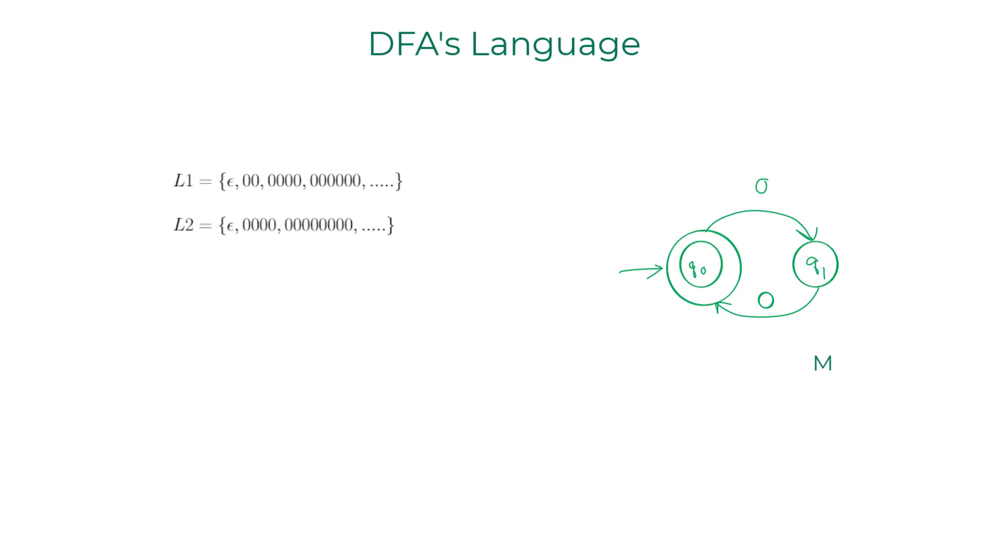But if I ask you, what is this machine's language, which one would you pick? I'm pretty sure you're leaning towards L1, because L1 contains all the possible strings that are accepted by the machine M, whereas L2 is missing a few. So L1 is the language of the machine M. To summarize, a DFA can accept all the strings from multiple languages, but it recognizes only one language. The machine M recognizes L1. The machine M does not recognize L2.